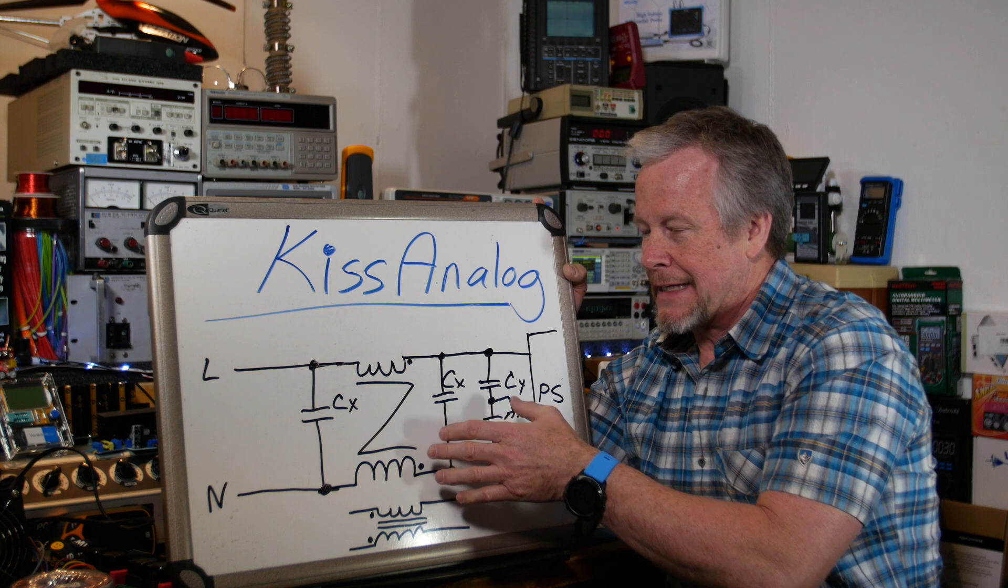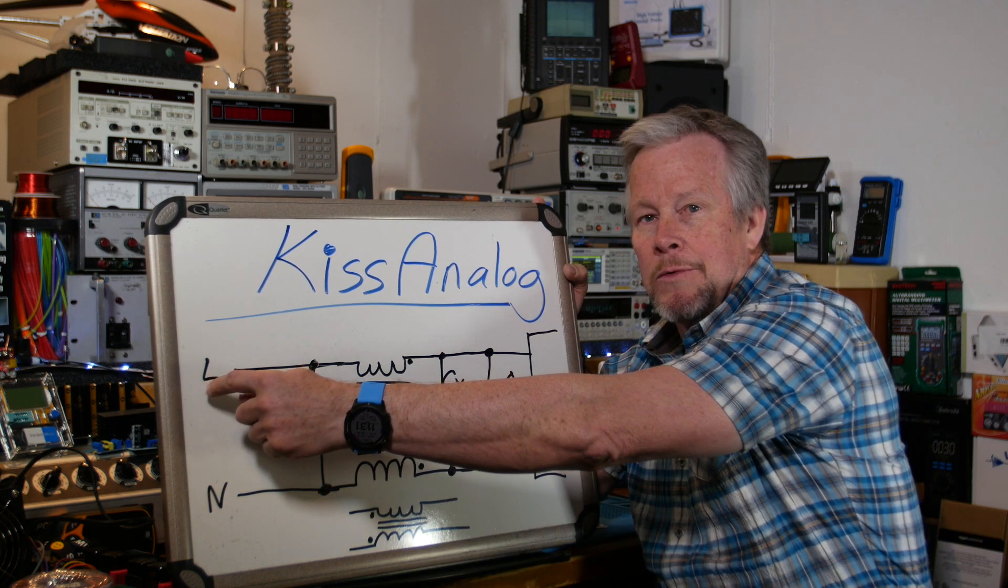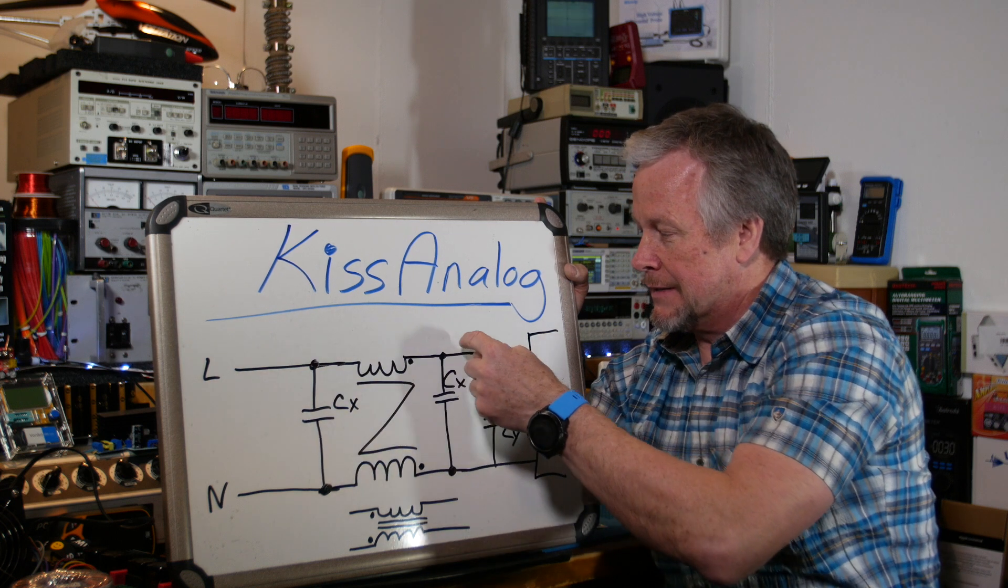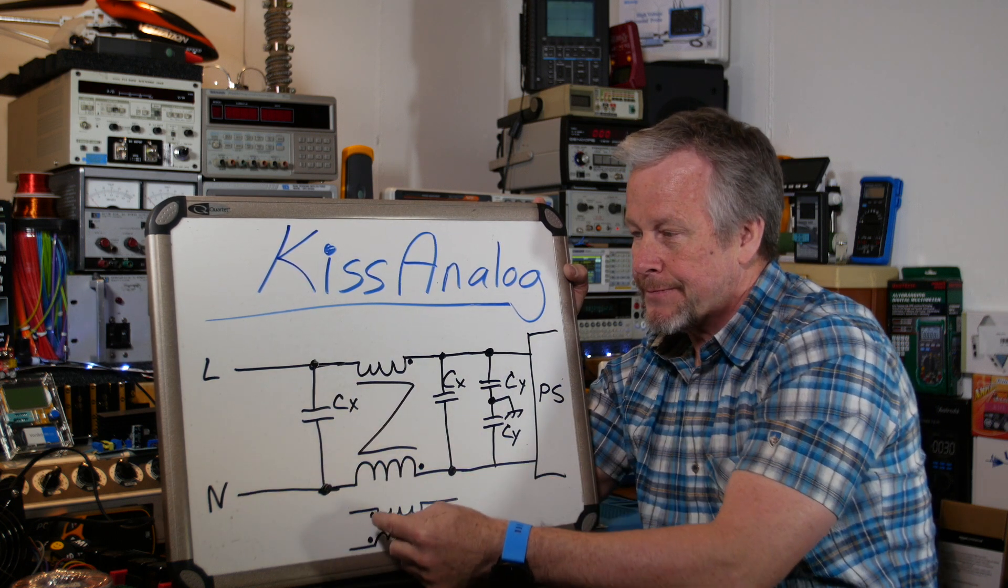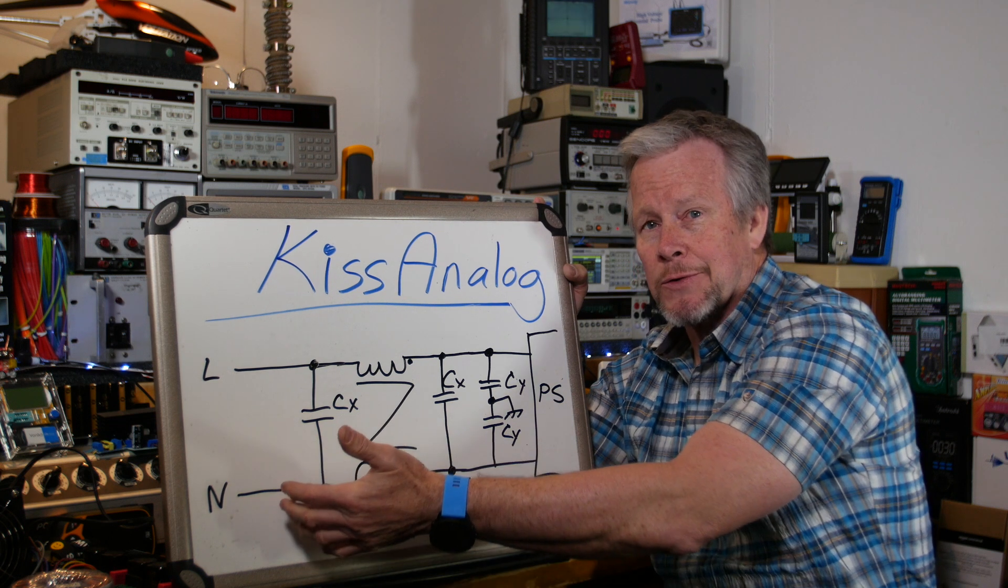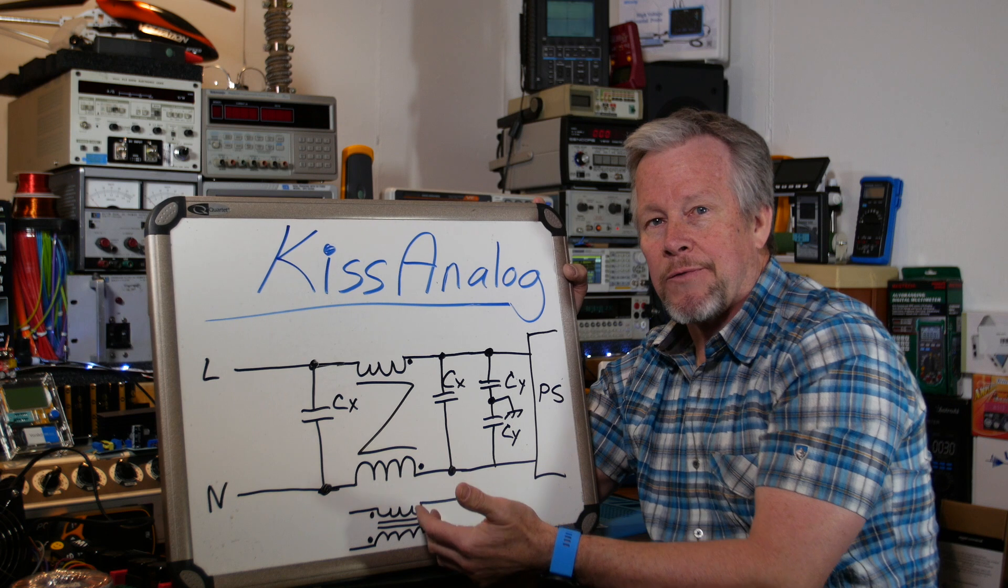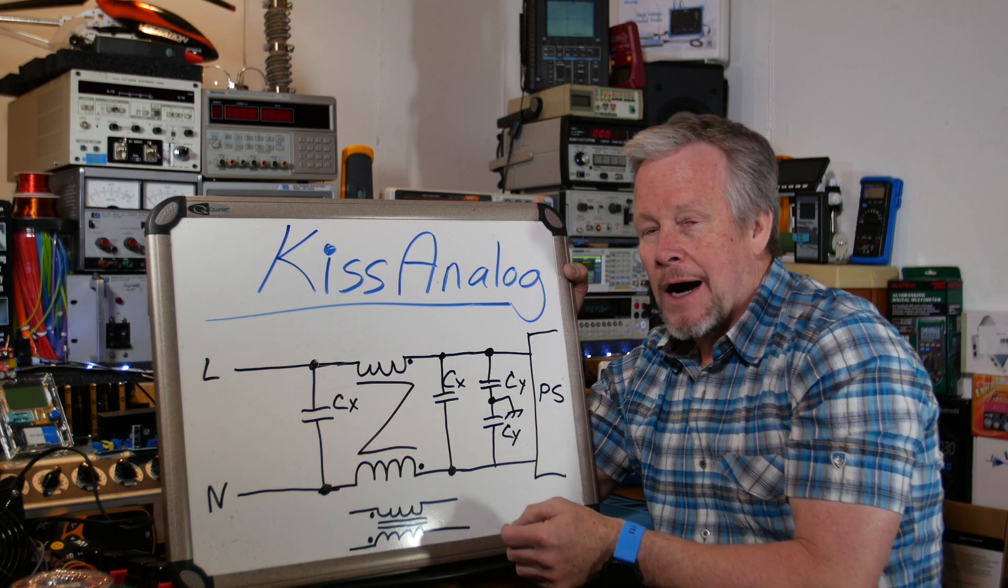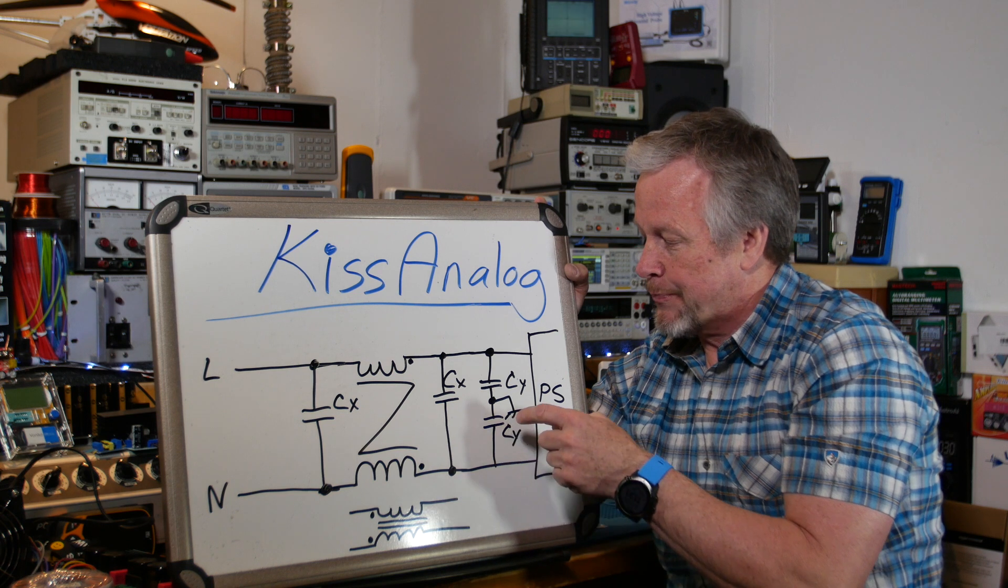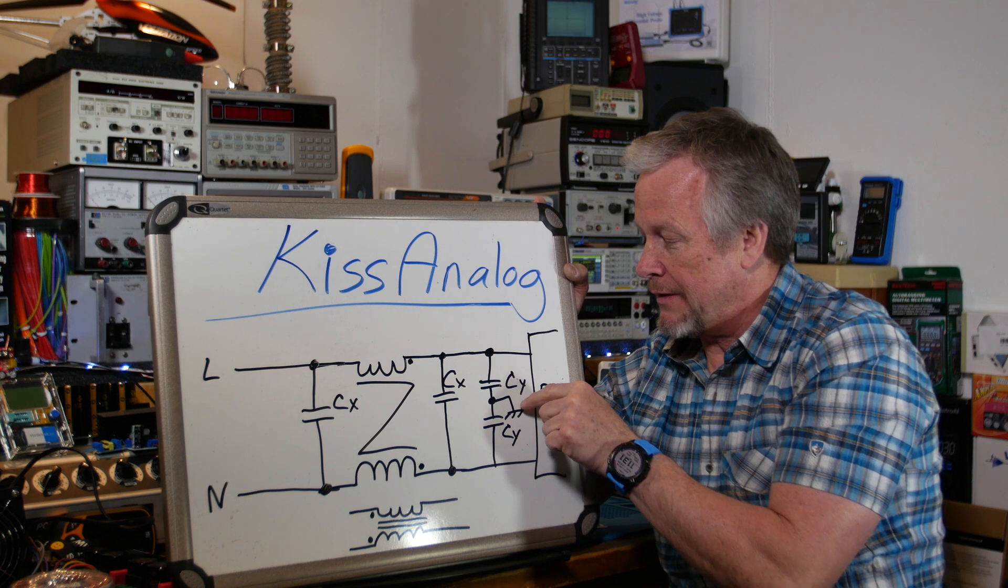Your normal current flow is in here from your line, out your neutral. That's also called normal mode or differential mode because it's the differential current. Common mode is, let's say you have two scope probes, you take the grounds, you tie them to your chassis right here on these two caps.